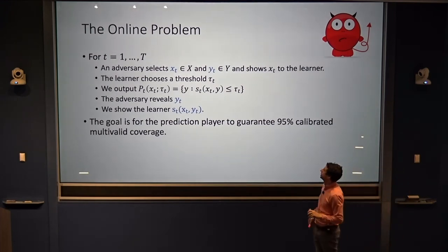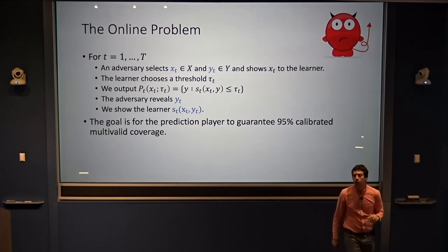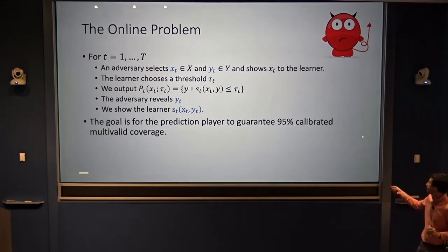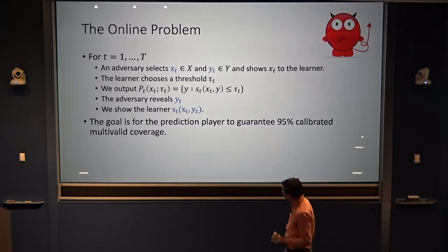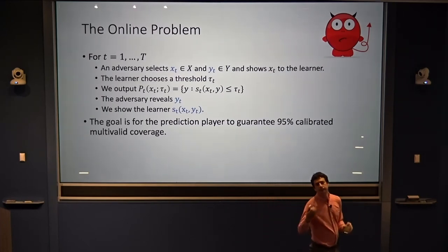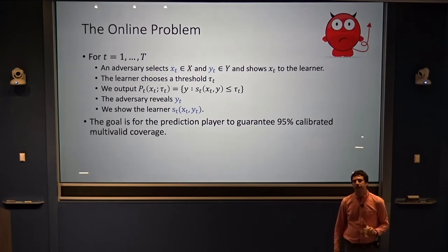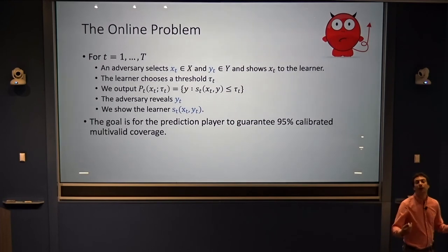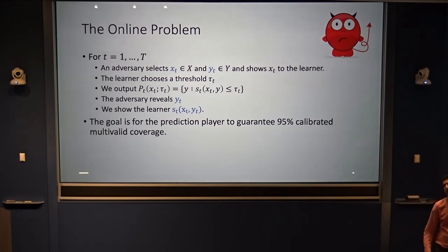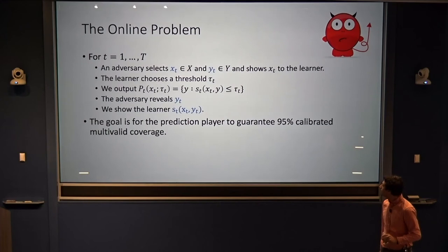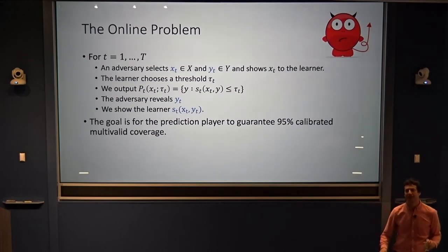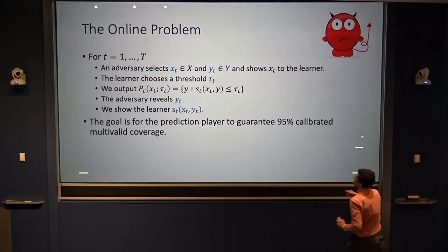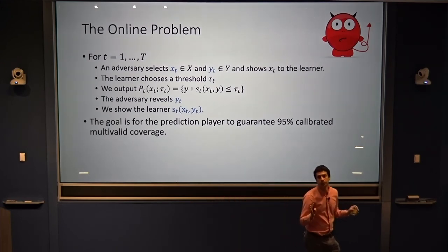The groups come from domain knowledge — in a medical application, pick properties of a patient that might be medically relevant, or demographic groups based on gender, race, nationality, disability, or sexuality. The groups are subsets of the feature domain, and multi-valid coverage is defined in terms of them. The adversary picks the features, which determines what groups each person is a member of — e.g., a group might be 'people with egg allergies over the age of 35.' The adversary is unconstrained — they could show the same patient every time. But if we can show something in this model, it'll work for any real situation.